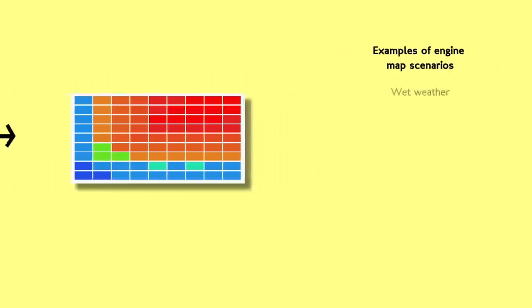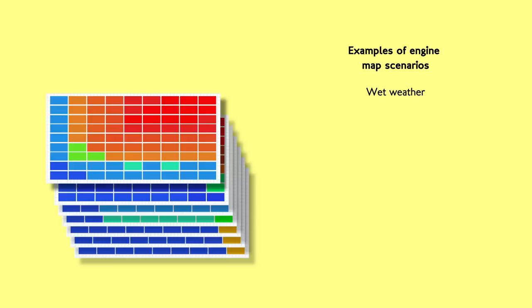You'll probably have one map that's suited for wet weather where, again, wheel spin is a big problem even at high speeds. You might have ones that are more or less power intensive depending on whether you're going full beans in qualifying or pacing yourself in the middle of a race.